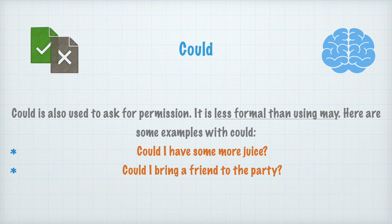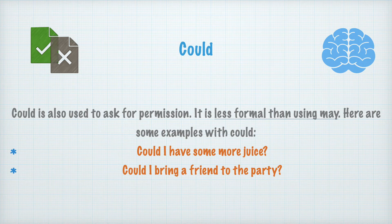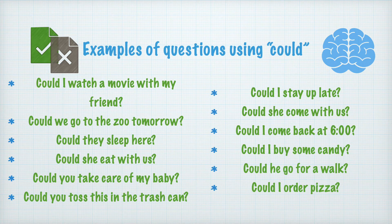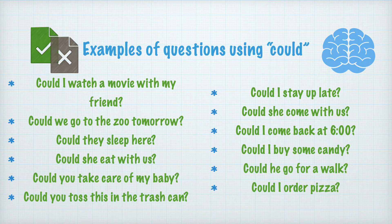Could. Could is also used to ask for permission. It is less formal than using may. Here are some examples with could. Could también se usa para pedir permiso. Es menos formal que usar may. Aquí hay algunos ejemplos con could. Could I have some more juice? ¿Me pueden dar más jugo? Could I bring a friend to the party? ¿Puedo traer a un amigo a la fiesta? Examples of questions using could — ejemplos de preguntas usando could: Could I watch a movie with my friend? ¿Puedo ver una película con mi amigo? Could we go to the zoo tomorrow? ¿Podemos ir al zoológico mañana? Could they sleep here? ¿Pueden dormir aquí? Could she eat with us? ¿Puede ella comer con nosotros? Could you take care of my baby? ¿Podrías cuidar a mi bebé? Could you toss this in the trash can? ¿Podrías tirar esto en el cesto de basura?